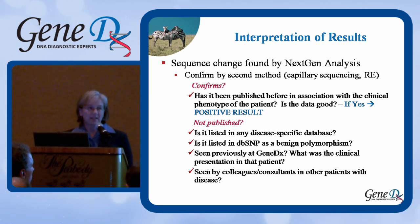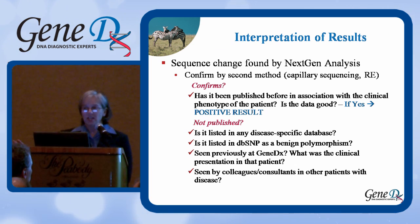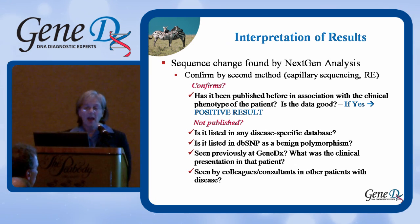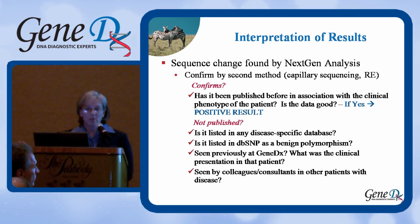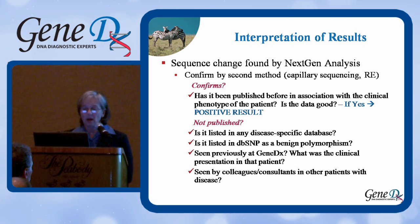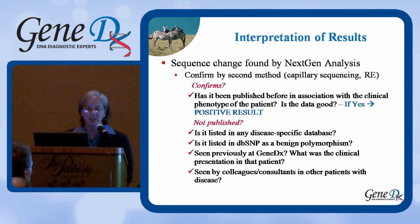What if what we find is not published? This happens more and more because we're looking at entire genes where people in the past have only been looking at parts of genes, and we're looking at more genes where in the past people have been looking at a very small subset of genes. So we go through a lot of exercises at GeneDx evaluating those unpublished, what we call novel changes.